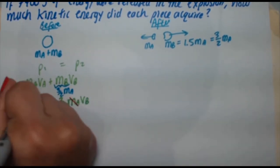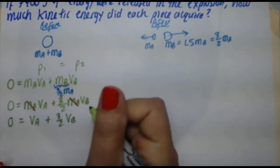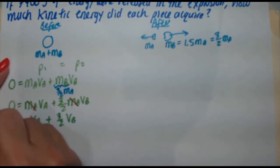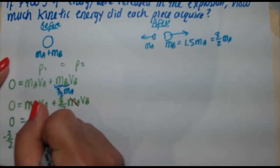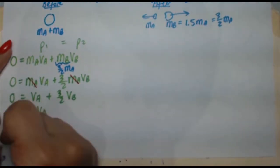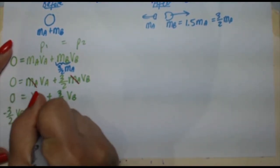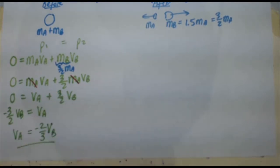Okay, so now you're left with zero equals vA plus 3 halves vB. So bring the 3 halves vB to the left, making it negative. Negative 3 halves vB equals vA. I'm just going to go ahead and solve for vB. VA is equal to negative 2 thirds vB. Okay, so this is what I've got now. This will help me simplify my later expressions.